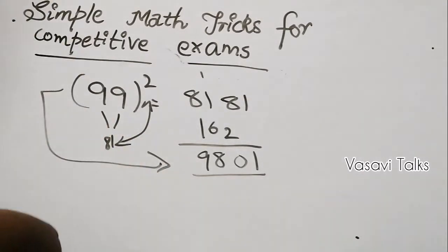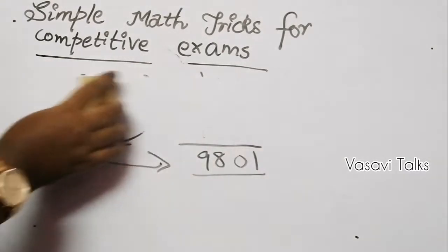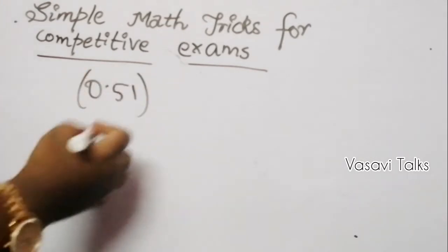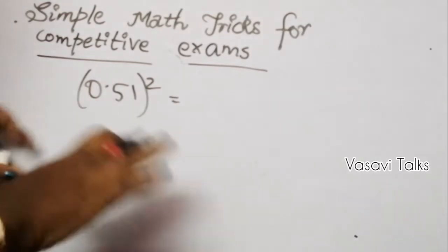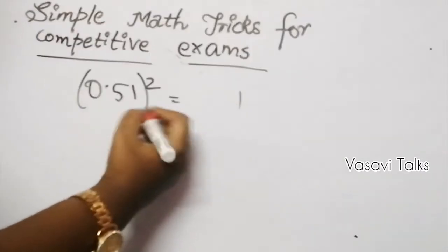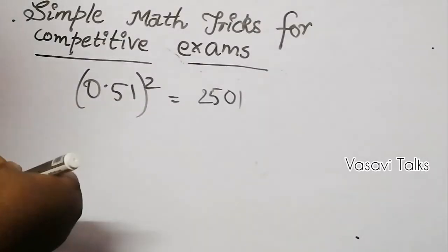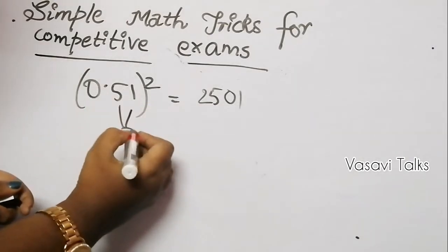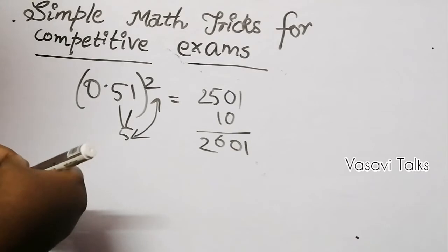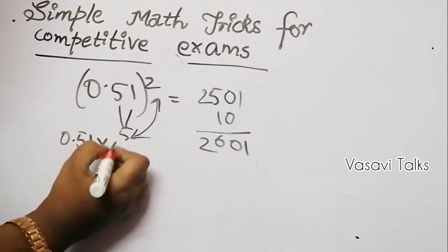This method is very simple for two-digit numbers. We can also apply it to decimals. Suppose we want to find 0.51 squared. We treat it as 51, then apply the trick: 1 squared is 1, 5 squared is 25. Then 5 into 1 is 5, multiply by 2 to get 10. So 0.51 squared becomes 0.2601.